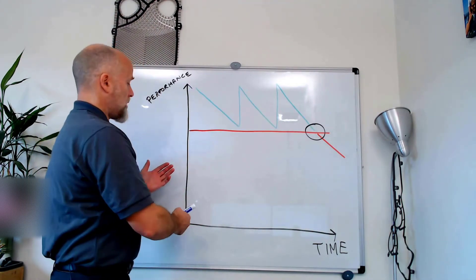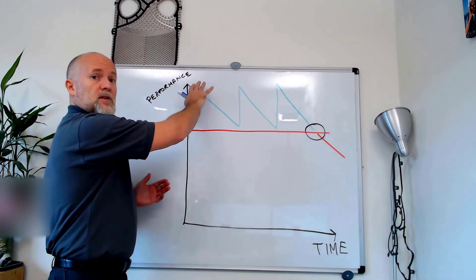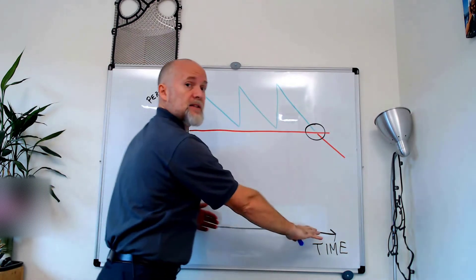Okay, so in this curve you have, in this axis, the performance of the heat exchanger and this axis is time.